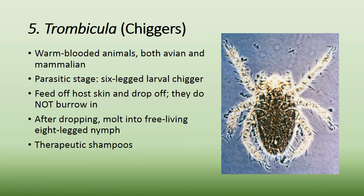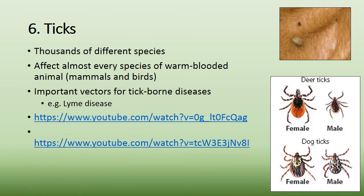Trombicula, often called chiggers, affects warm-blooded animals — both avian and mammalian. The parasitic stage is a six-legged larval chigger that feeds off the skin and then drops off. After dropping off, it molts into a free-living eight-legged nymph. Treatment is with a therapeutic shampoo. On skin scraping, this is what you would see under the microscope.